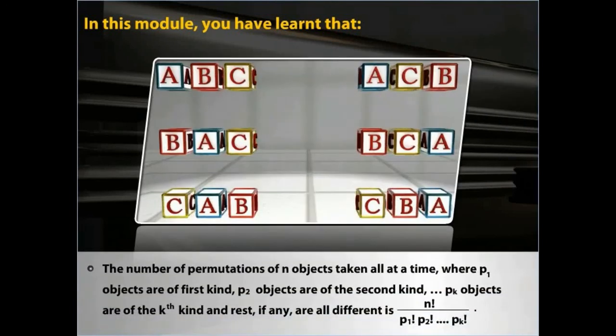The number of permutations of n objects taken all at a time, where p1 objects are of the first kind, p2 are of the second kind, pk objects are of the kth kind, and the rest if any are all different, is n factorial upon p1 factorial × p2 factorial, and so on, till pk factorial.